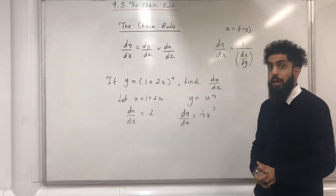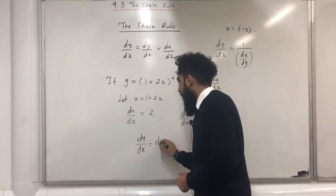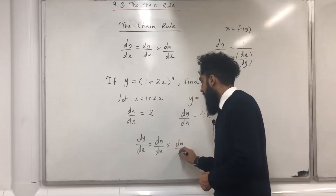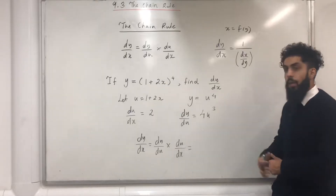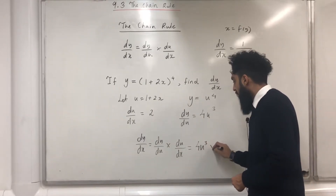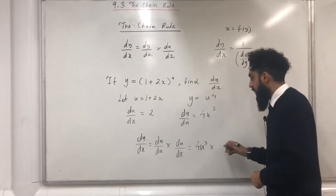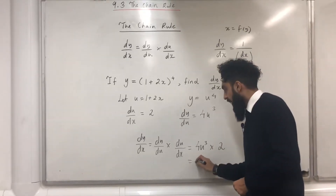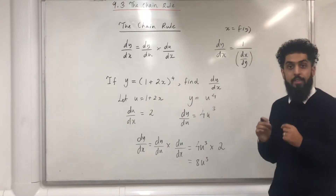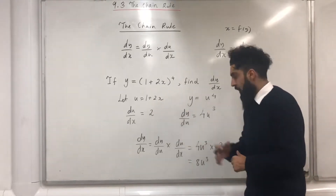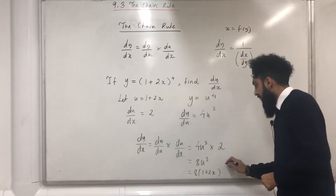I can use the chain rule and write dy over dx is equal to dy over du multiplied by du over dx. My dy over du is 4u to the power of 3, multiplied by my du over dx which is 2. So 4u cubed multiplied by 2 is 8u cubed. The final step is to replace u with 1 plus 2x, giving 8(1 plus 2x) to the power of 3.